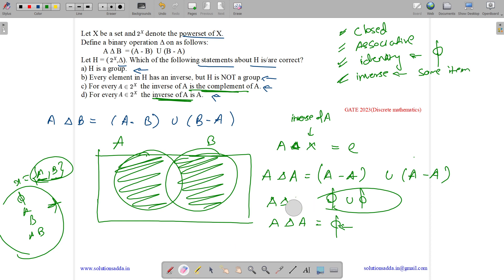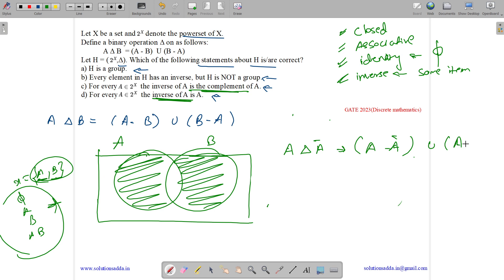Why can't the inverse be the complement of an item? I will show you. Suppose we have A delta A complement. So what will be its value? Its value will be A minus A complement union A complement minus A. A complement has everything that A does not have. So A complement subtracted from A will give A. And A subtracted from A complement will give A complement. What is A union A complement? It is universal set, which is not equal to our identity element phi. Thus A complement is not an inverse for A.